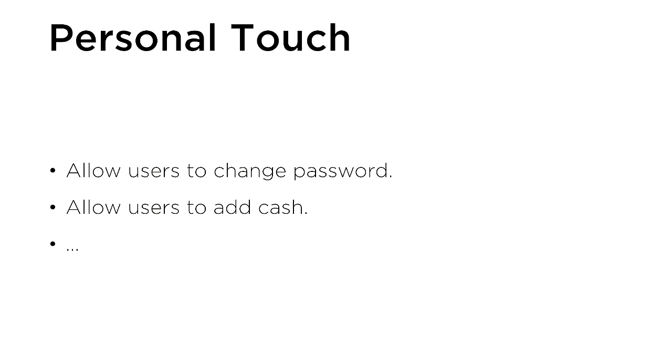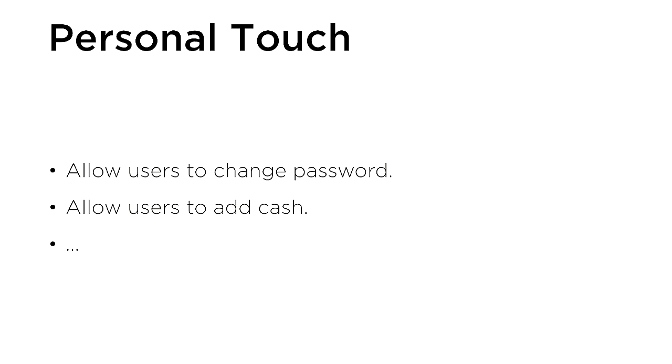Once you've implemented all of those features, the last thing to do is add a personal touch — decide on a new feature of your own to add to CS50 Finance. For example, you might allow users to change their password, or allow users to add new cash to their account, or choose something else entirely. Design new routes, templates, or tables as needed to make that functionality possible. Once completed, you'll have a fully functional web application allowing users to register, sign in, buy and sell stocks, and see a history of all their transactions. My name is Brian, and this was CS50 Finance.